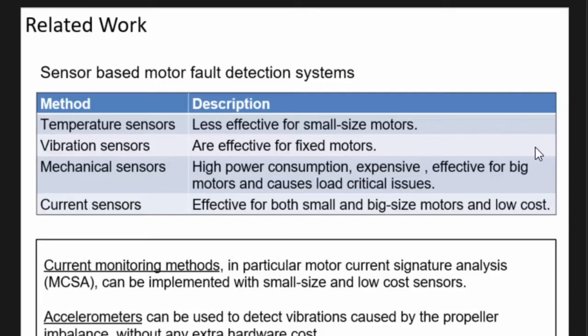Those sensors are usually just used for stationary motor monitoring. The UAV is different because the motor is moving. In that case, temperature sensors may not work well, and also vibration sensors, because it's moving itself so you cannot judge whether it's caused by moving or a motor problem.